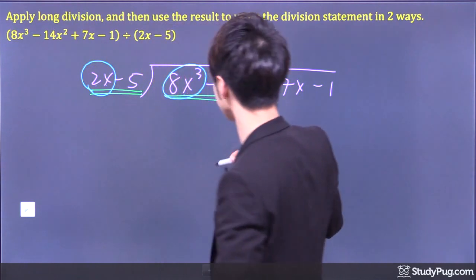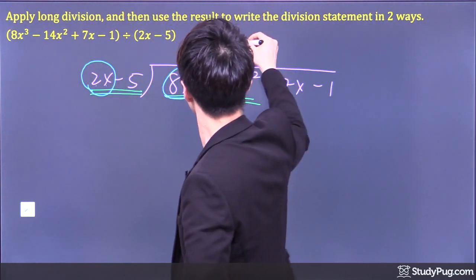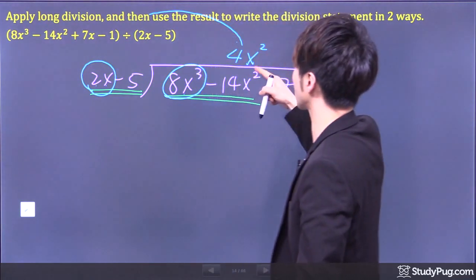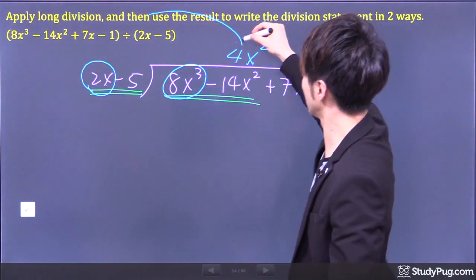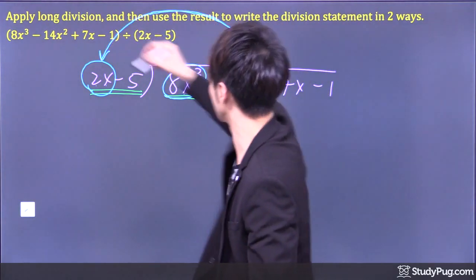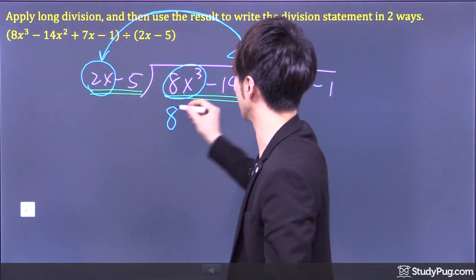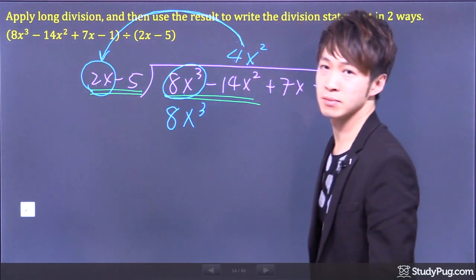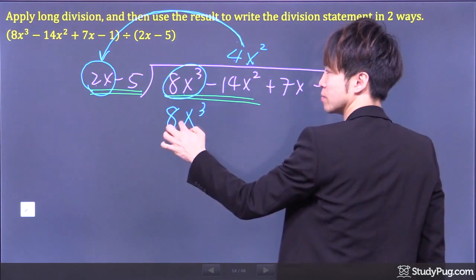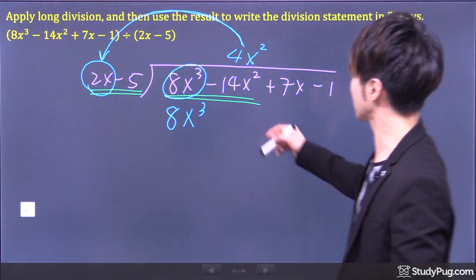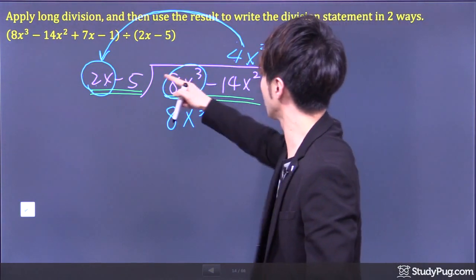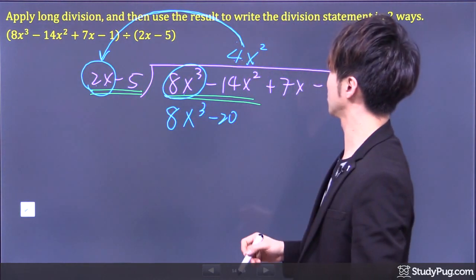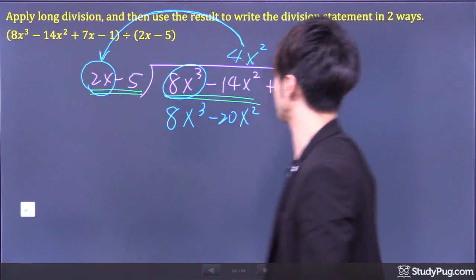Once we determine 4x² at the quotient position, let's multiply this in. 4 times 2 we get 8; x² times x we get x³ — this is what we're looking for, matching this term. Next, 4 times negative 5 is negative 20, and we still have the x².